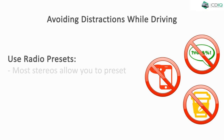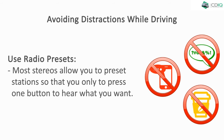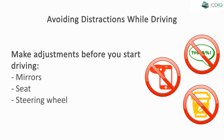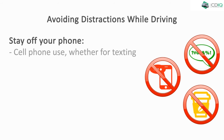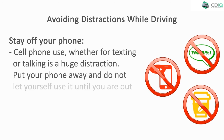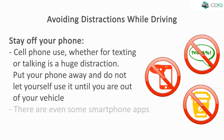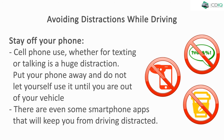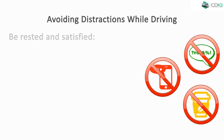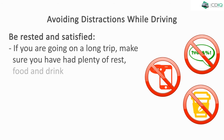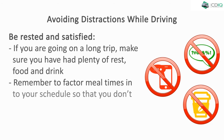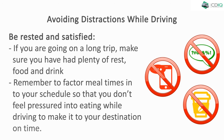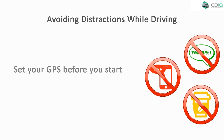Use your radio presets — most stereos allow you to preset stations so that you only have to press one button to hear what you want. Make adjustments before you start driving, including mirrors, seat, and the steering wheel. Stay off your phone — cell phone use, whether for texting or talking, is a huge distraction; put your phone away and do not use it until you are out of your vehicle. If needed, there are smartphone apps that will help keep you from driving distracted. Be rested and satisfied — if you are going on a long trip, make sure you have had plenty of rest, food, and drink, and factor meal times into your schedule so you don't feel pressured into eating while driving. Set your GPS before you start driving.